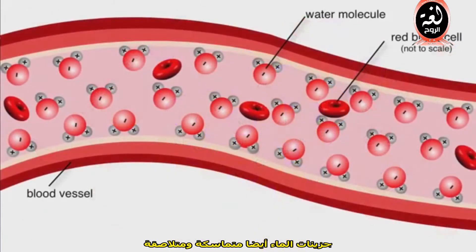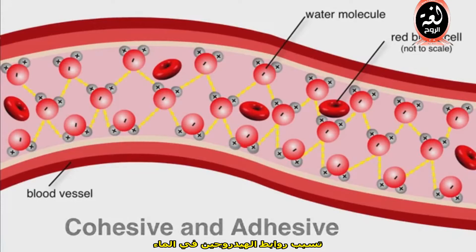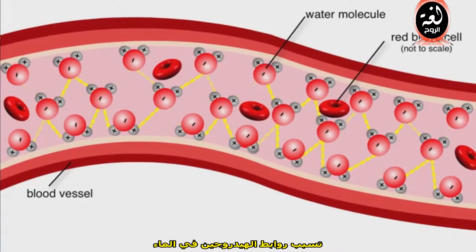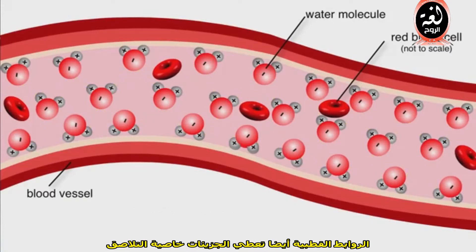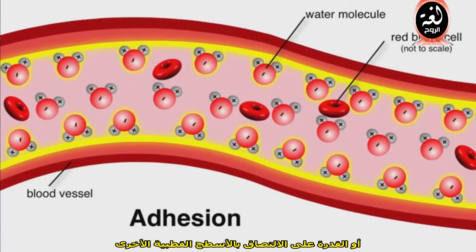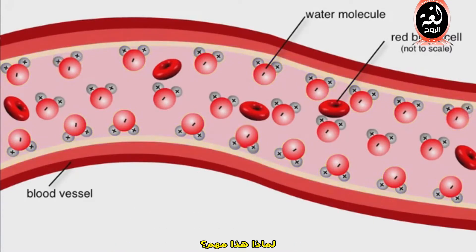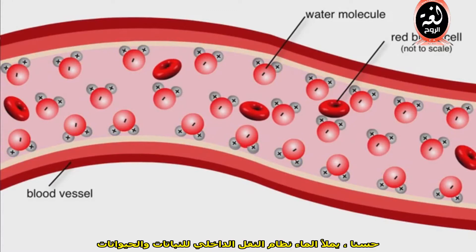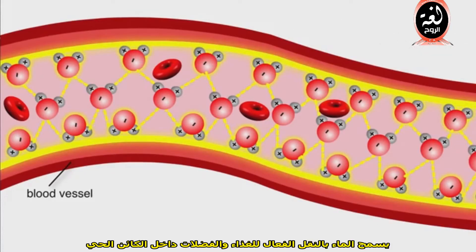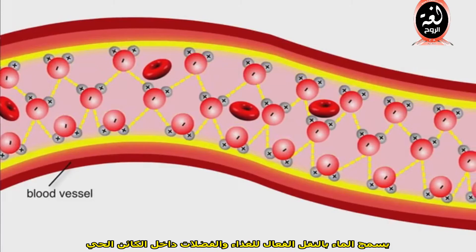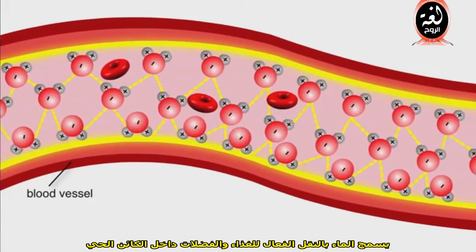Water molecules are also cohesive and adhesive. The hydrogen bonds in water cause water molecules to stick together, a property known as cohesion. Polar bonds also give molecules an adhesive property, or the ability to cling to other polar surfaces. Water fills the internal transport systems of plants and animals, and because of these cohesive and adhesive properties, water allows for the efficient transport of nutrients and waste within an organism.